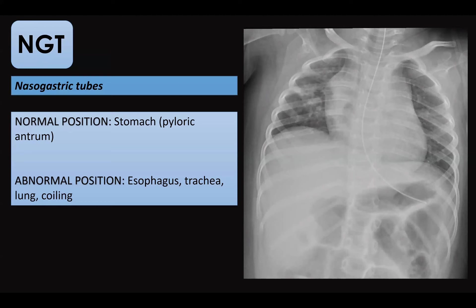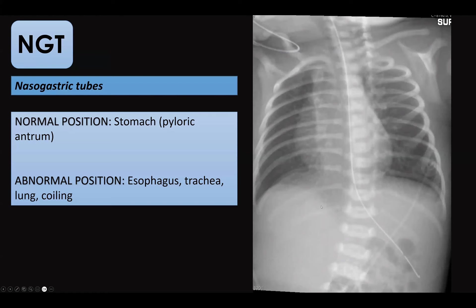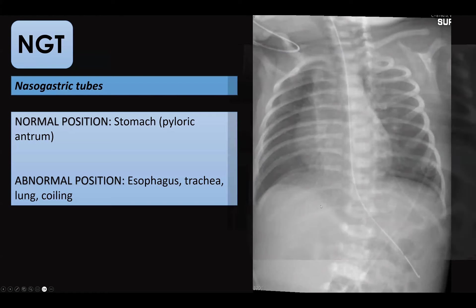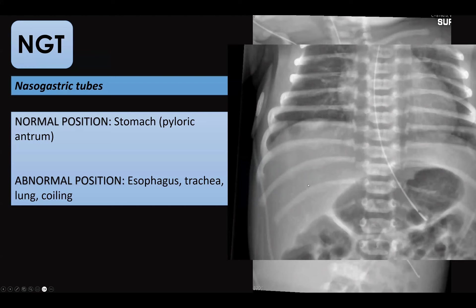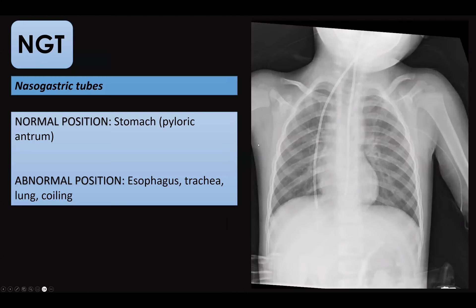For nasogastric tubes, the correct position is 5 to 10 centimeters below the gastroesophageal junction or the level of the diaphragm. Several examples of normal nasogastric tube positions are shown. In one case, the tube curls from outside, goes down, then curls up, with its lower end at the distal esophagus — an incorrect position requiring repositioning. Another case shows the lower end of a nasogastric tube raising the question: is it too long, too short, or in an abnormal location?